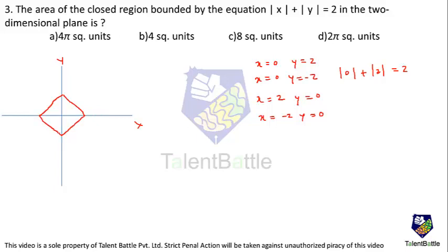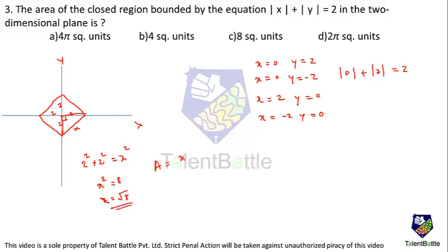We need to find the area of this square. Each half-diagonal has length 2. To find the side x of the square, we use Pythagoras: 2 squared plus 2 squared equals x squared, so x squared equals 8, meaning the side equals root 8. Area equals side squared, which is (root 8) squared equals 8 square units. The correct answer is C: 8.